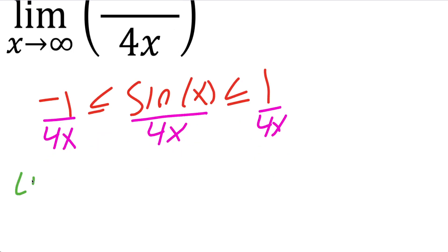So the next step is to find the limit as x approaches infinity for this piece, negative one divided by four x. If I put infinity here, I get negative one divided by infinity, which is going to be zero.